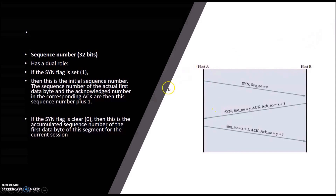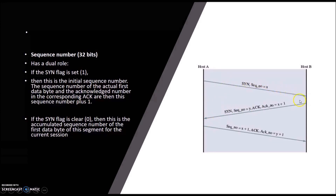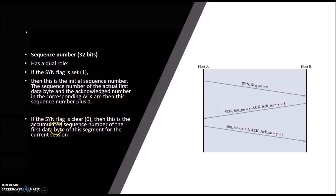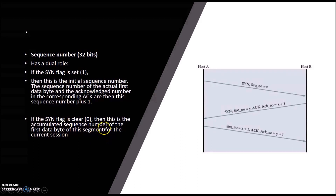Suppose host A is sending a request with sequence number X. When host B replies to confirm the request was successfully received, it sends an acknowledgement number equal to the initial sequence number plus one. When the SYN flag is set to zero, this is the accumulated sequence number of the first data byte of this segment for the current session. The sequence number field consists of 32 bits.